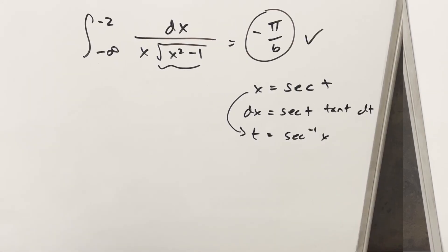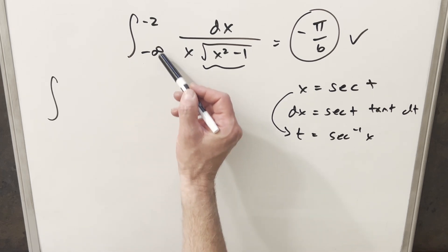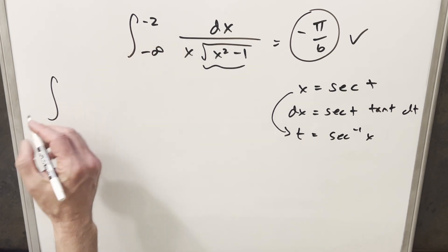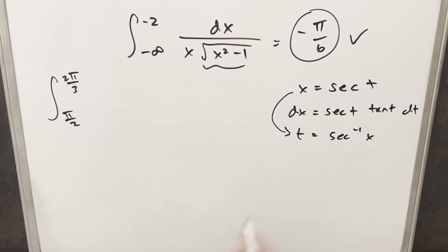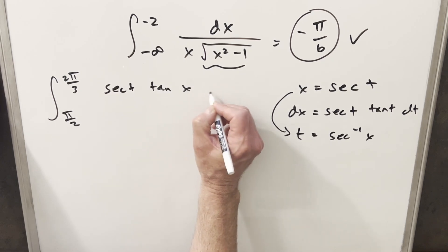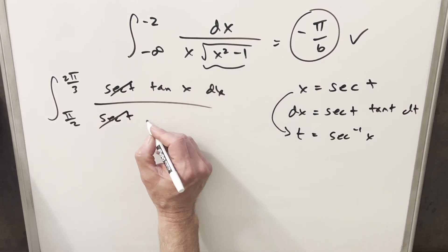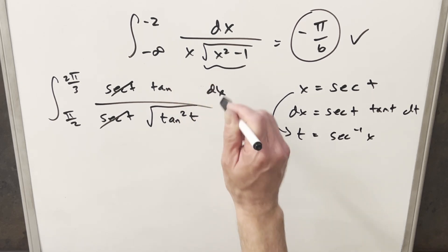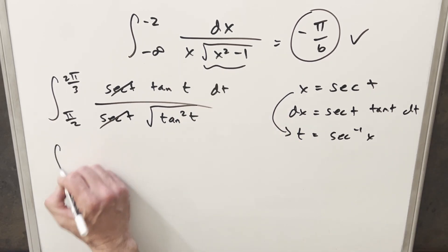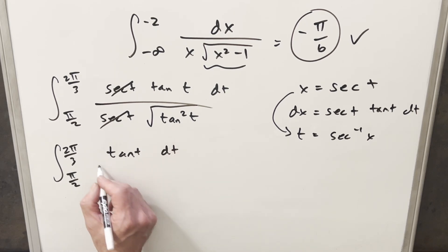For the last method I'll do the same trig substitution but define arc secant in the second quadrant, not the third. Arc secant at minus two is two pi over three and arc secant at minus infinity is pi over two. Going through the same substitution quickly: x equals secant(t) cancels out, and the square root of x squared minus one becomes the square root of tan squared t. We integrate tan(t) dt over absolute value of tan(t), going from pi over two to two pi over three.